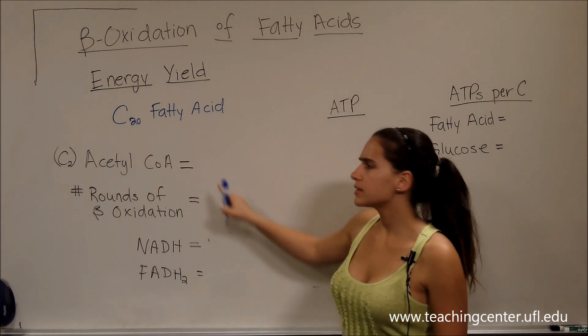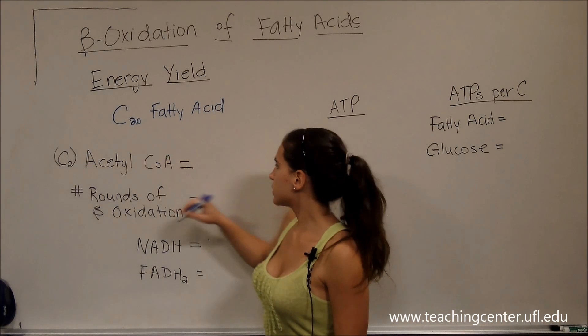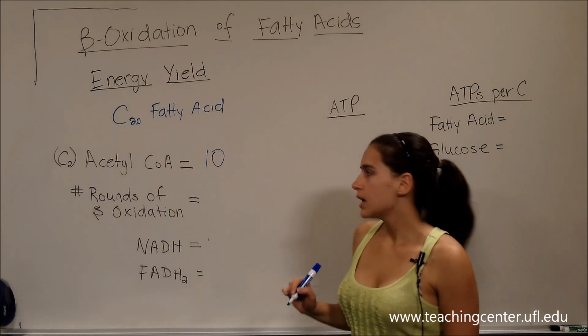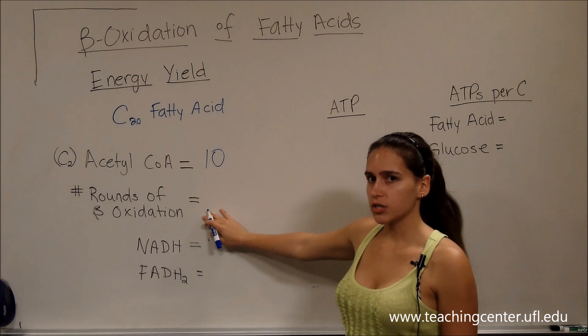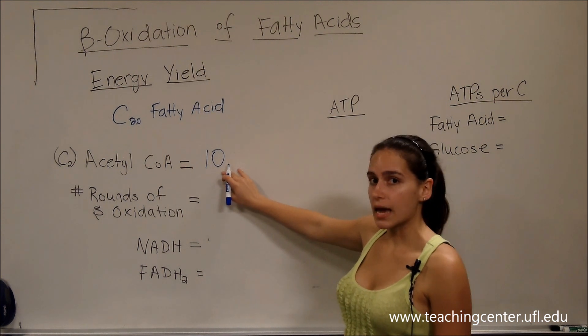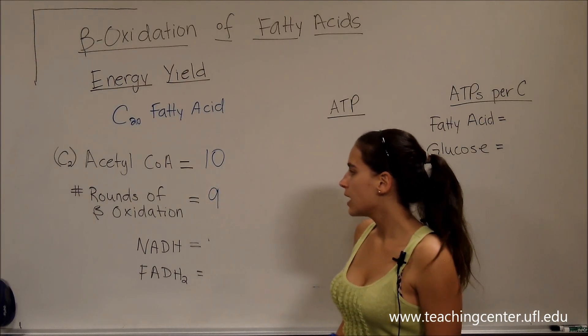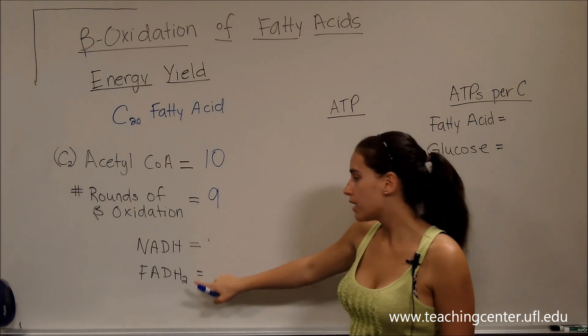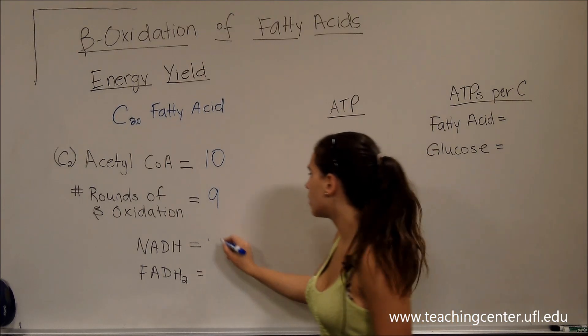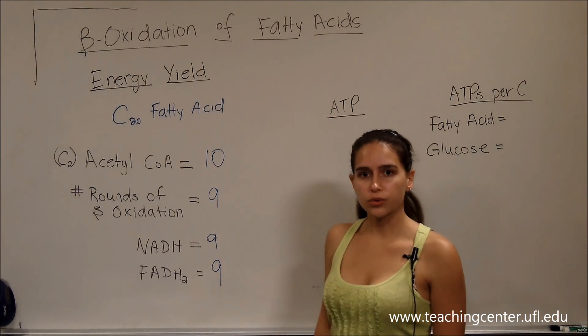So how many acetyl-CoA's would I get? Simply we just divide it by 2, that's going to be 10 acetyl-CoA's. And how many rounds of oxidation are we going to undergo? We just do 10 minus 1, it's going to be 9 rounds. And that tells us how many NADH and FADH2's we get. So there's going to be also 9 NADH's and 9 FADH2's.